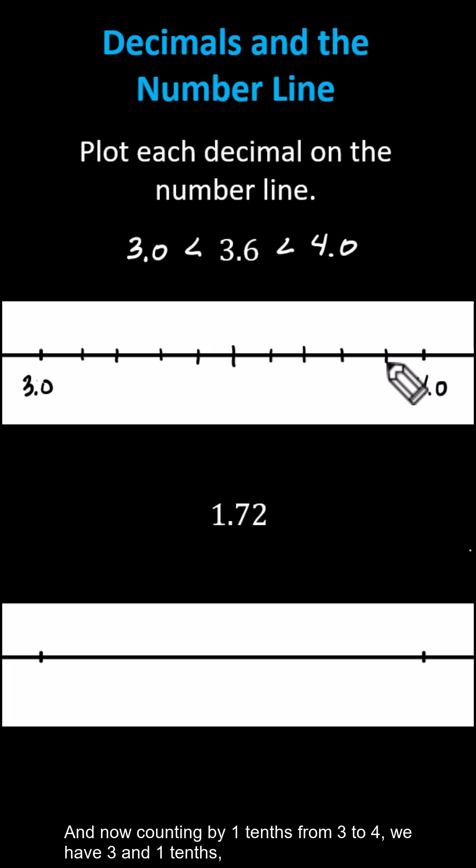And now we'll count by tenths from 3 to 4. We have 3 and 1 tenth, 3 and 2 tenths, 3 and 3 tenths, 3 and 4 tenths, and so on. I'm just staggering the values so they don't run together.